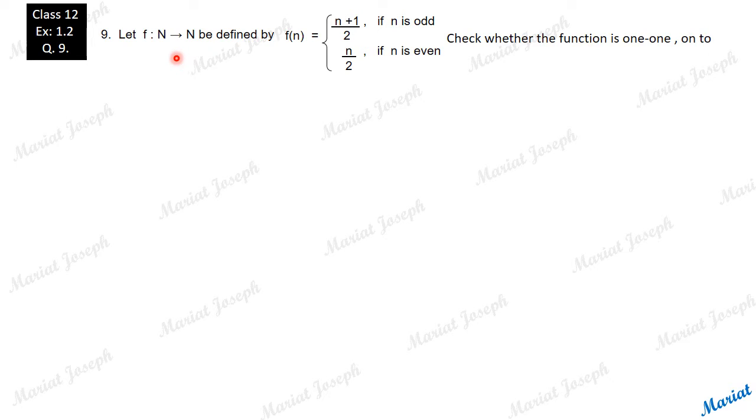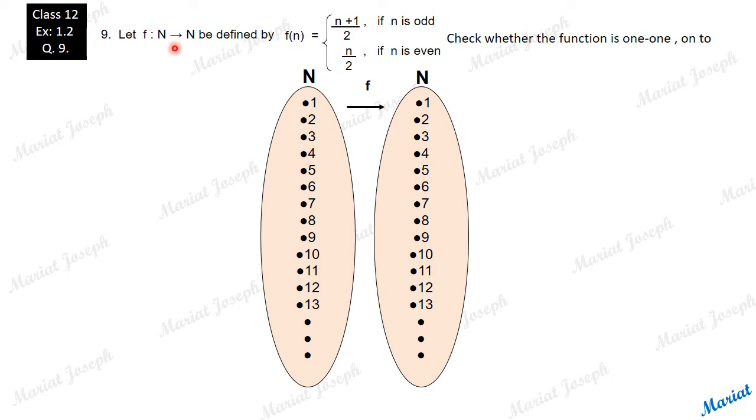Here we are given both domain and co-domain as the set of natural numbers, and for each element how to find the image, the rule is given. But the rule is a double rule - it depends upon the number that you are picking. The rule changes.